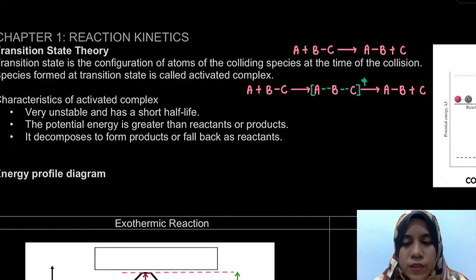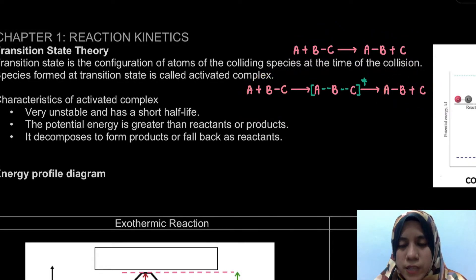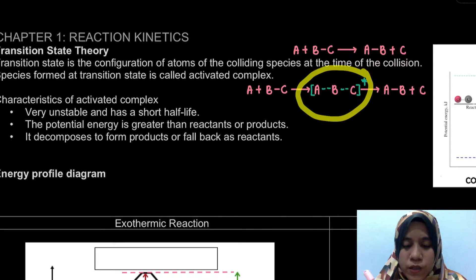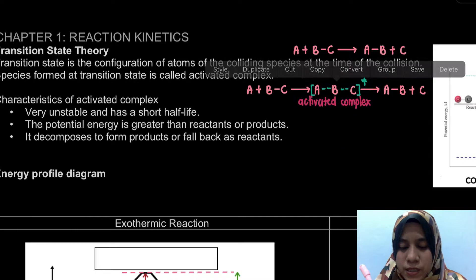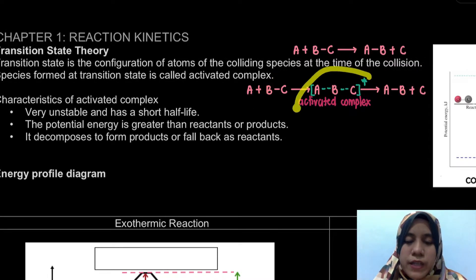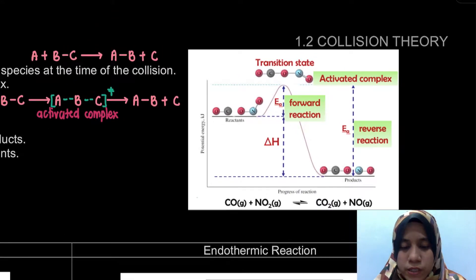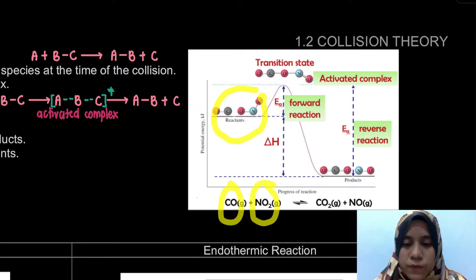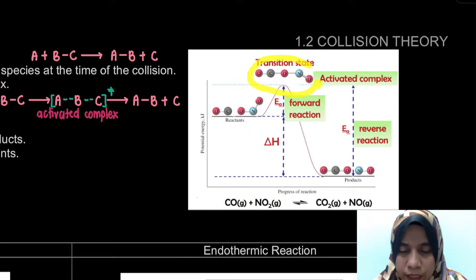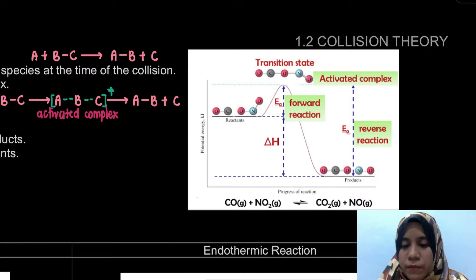Usually when we are given an equation, it only shows the reactant and the product. But before the reactant changes to product, it undergoes a transition state. The transition state is what we define as the activated complex. For example, looking at the equation: originally we have CO gas and NO2 gas as reactants. At the transition state, they are colliding and we can see the activated complex — all atoms are combined together.